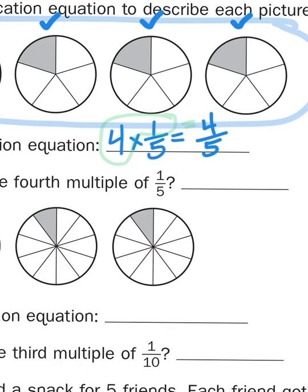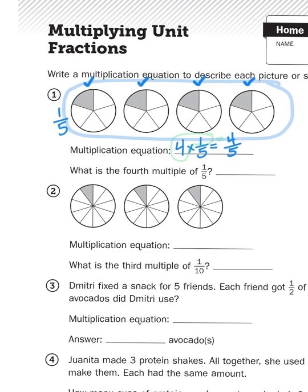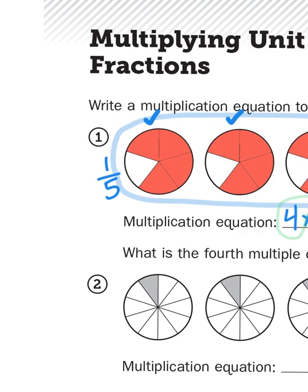Now, you might be wondering to yourself, well, what's the big deal? I could just count them, I could just look at them, right? Well, what would happen if instead of one-fifth, we were now looking at four-fifths apiece? As you can see, I recolored my fractions to represent four-fifths instead of one-fifth, because each circle has four out of the total five-fifths colored in.